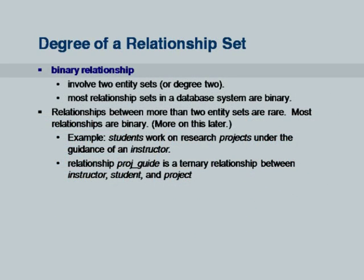Binary relationships are the most common, which we can represent using lines. Relationships between multiple entity sets — ternary, quaternary — are relatively rare. They do exist, but you have to think twice before creating a non-binary relationship because most of the time binary is the right choice.